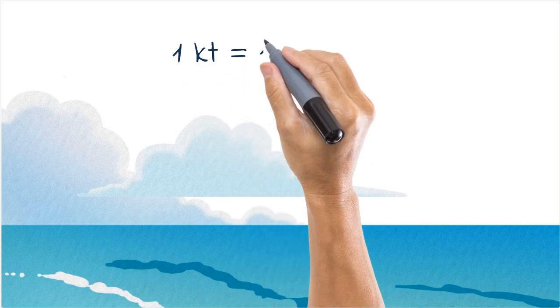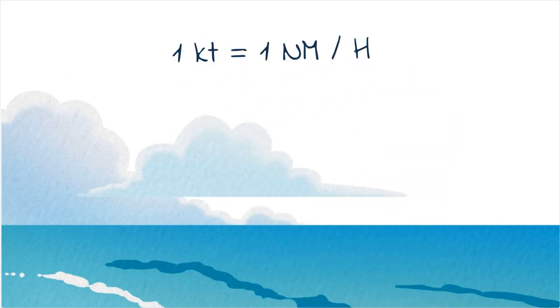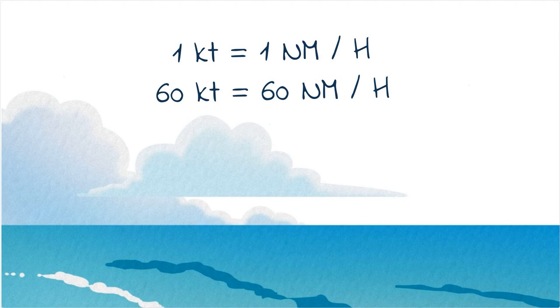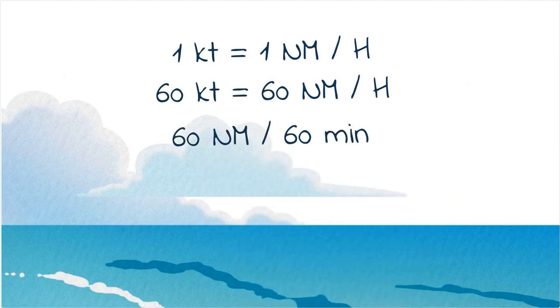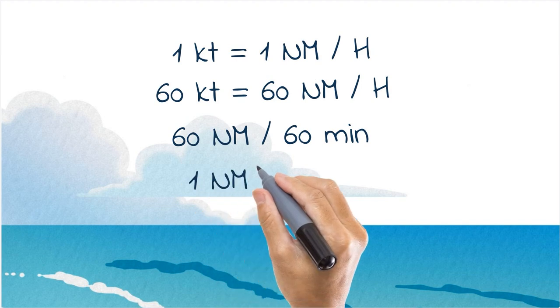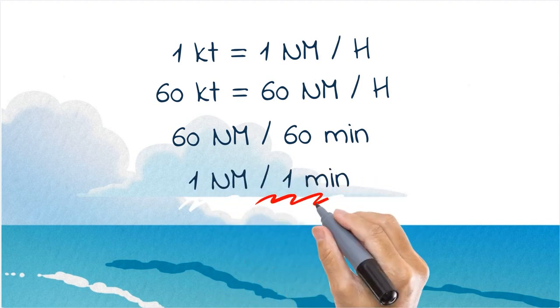For aviation purposes, we need to scale the speed. The first key number you need to remember is 60 knots. We will apply this number in different scenarios to make the magic happen. If one knot means you are traveling one nautical mile in an hour, then 60 knots means you're traveling 60 nautical miles in an hour — 60 nautical miles in 60 minutes, or one nautical mile in one minute. Keep this in mind.